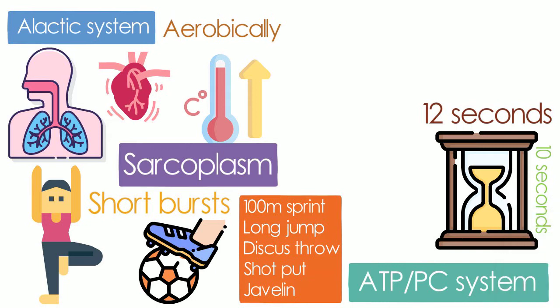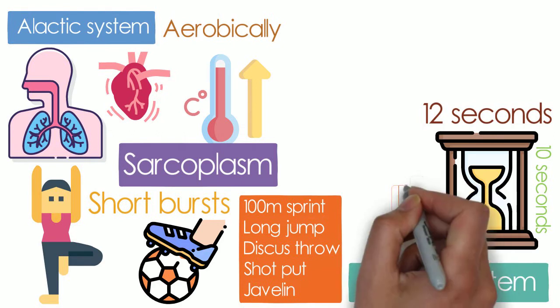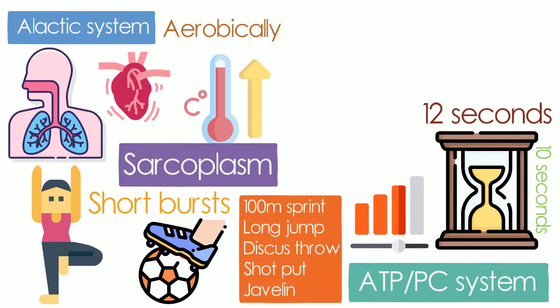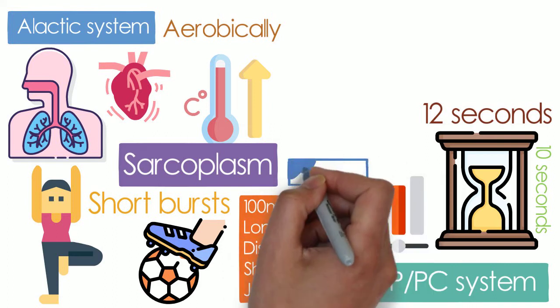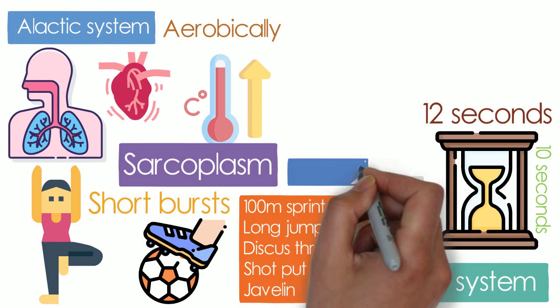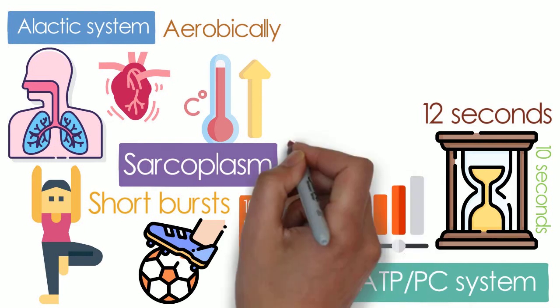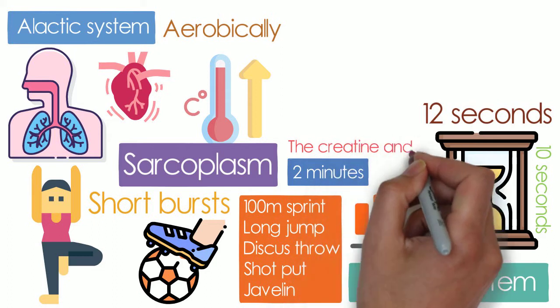If the exercise is sustained beyond this period at high intensity, the body will shift to a different energy system due to ATP's depletion. ATP-PC system is restored upon recovery of the body, which may last up to an average of 2 minutes. The creatine and PI are resynthesized to phosphocreatine upon recovery from the aerobic systems.